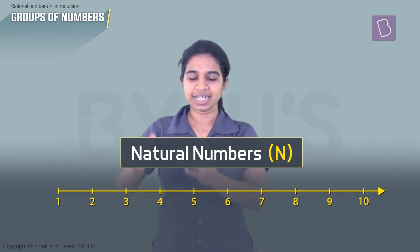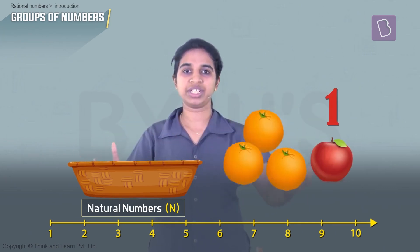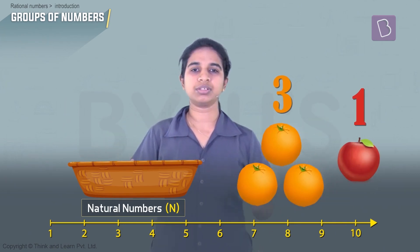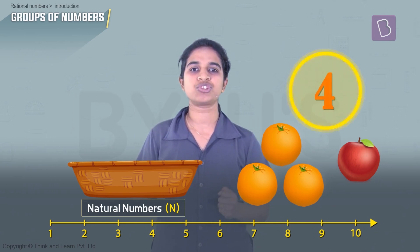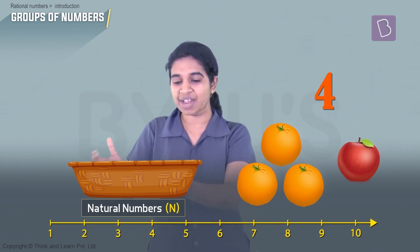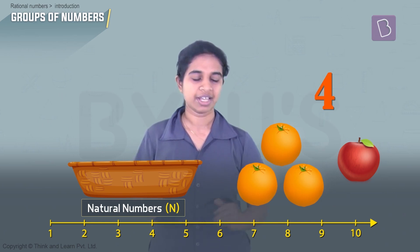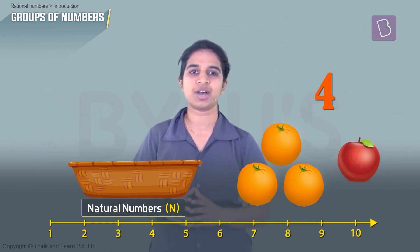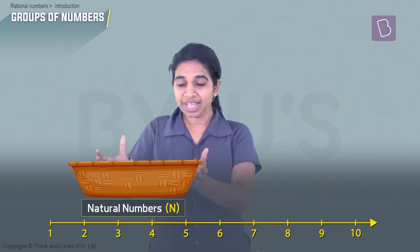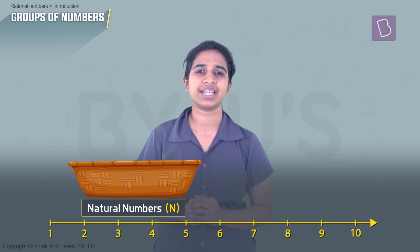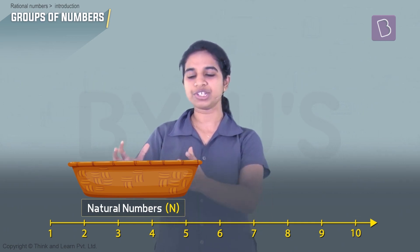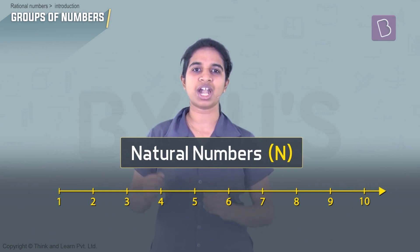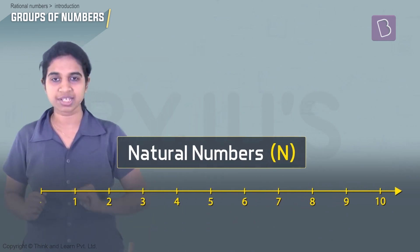We can now count everything. Let's take a basket — there's one apple here, three oranges, four fruits in total. Now what if we want to represent what is left in the basket? We could represent the fruits using natural numbers. But how do we represent what is left when there is nothing?